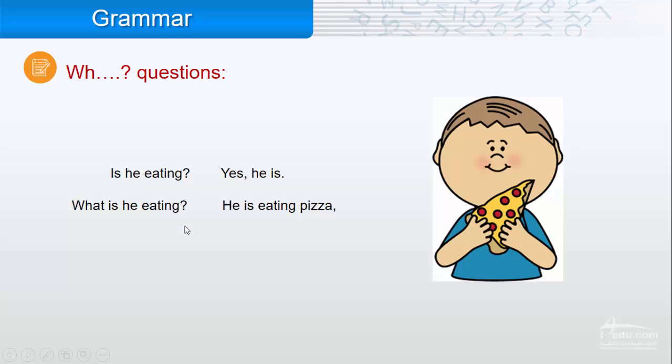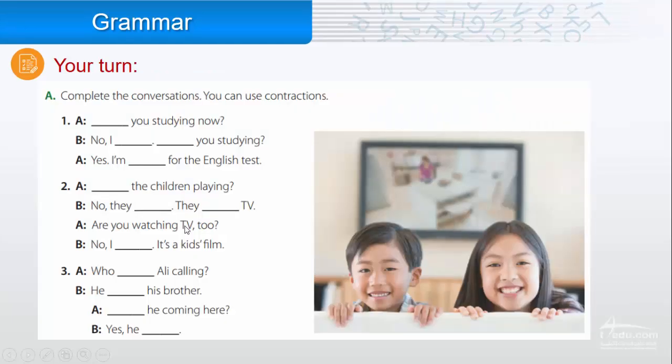Now it's your turn. Complete the conversations. You can use the contractions. 'Are you studying now?' 'No, I'm not.' 'Are you studying?' 'Yes, I'm studying for the English test.' Two: the question is about the children. 'Are the children playing?' 'No, they aren't. They are watching TV.' 'Are you watching TV too?' 'No, I'm not. It's a kids film.'